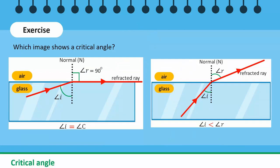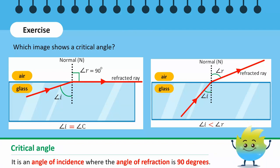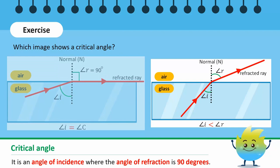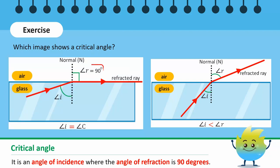The critical angle is defined as the angle of incidence when the angle of refraction is 90 degrees from the normal. In the image on the left side, the angle of refraction is 90 degrees from the normal and the refracted ray moves along the boundary of the glass.